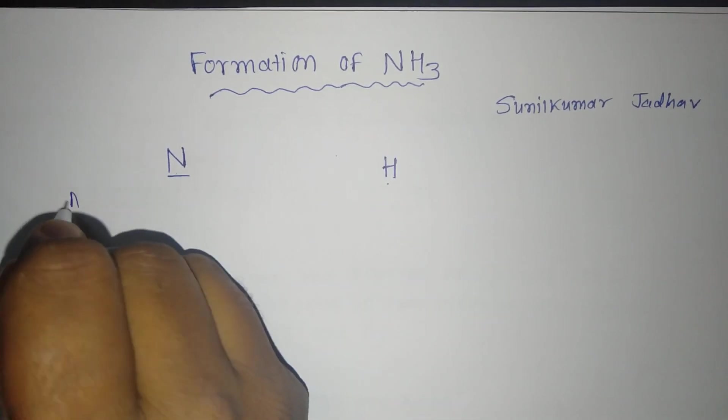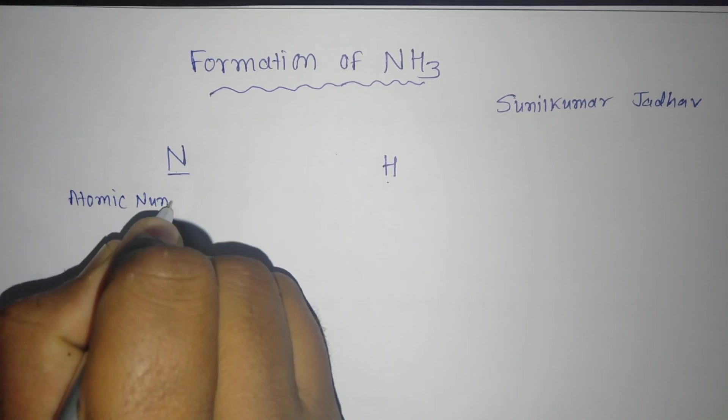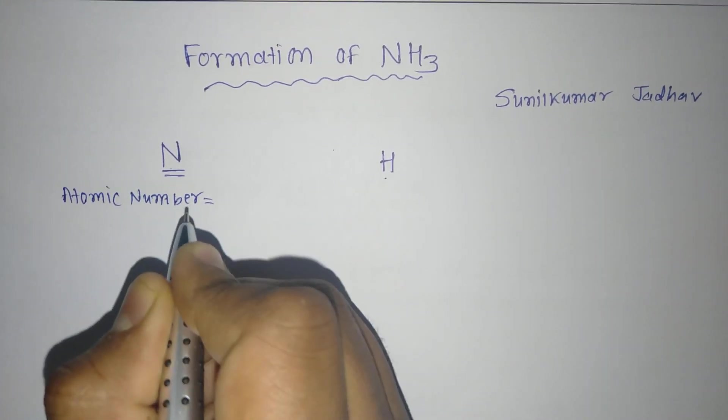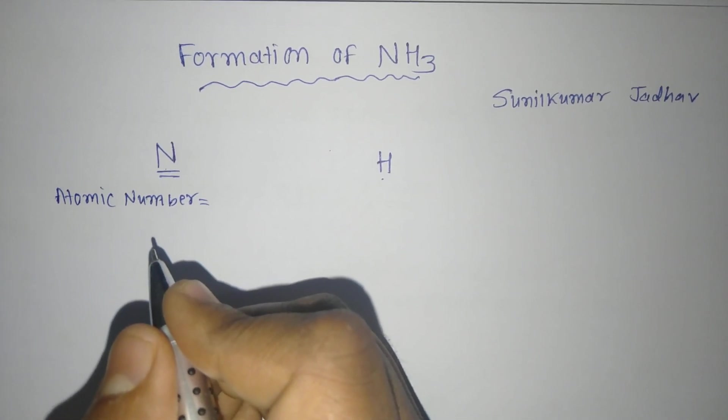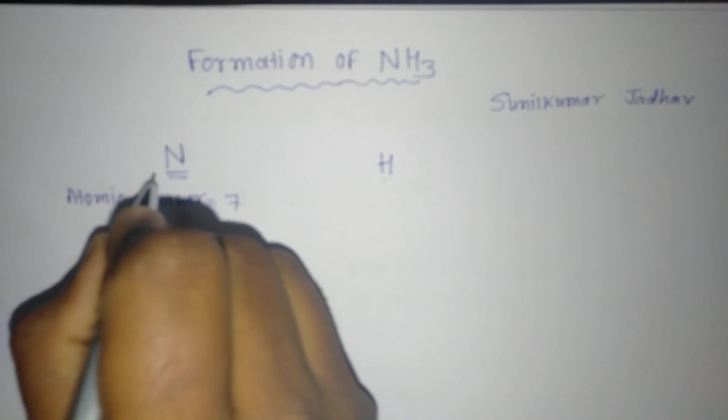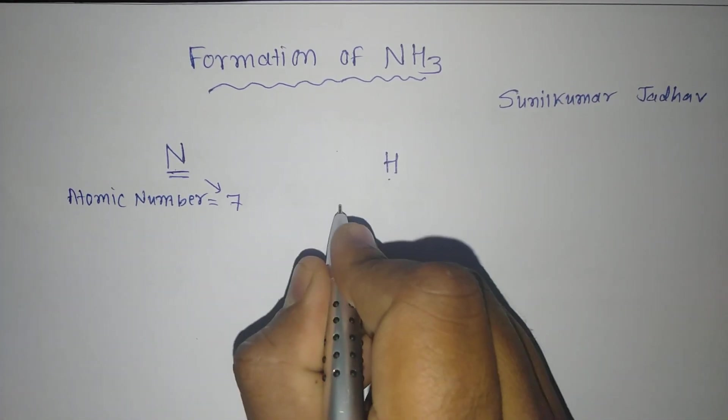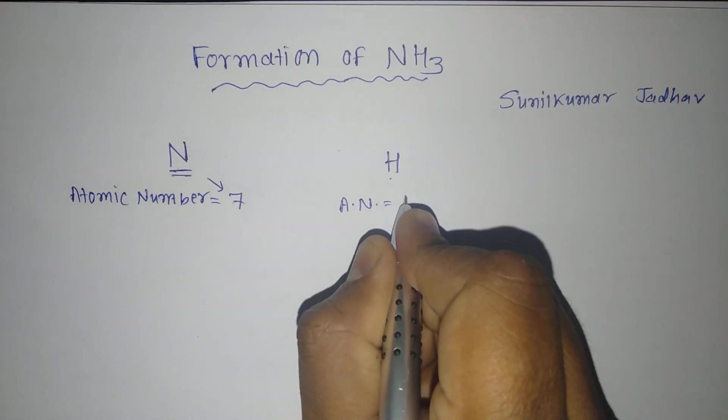We know that what is the atomic number of nitrogen? You can write atomic number of nitrogen. Atomic number of nitrogen is—you can see hydrogen, helium, lithium, beryllium, boron, carbon, nitrogen—its number is 7. For nitrogen the atomic number is 7, and for hydrogen we know that the atomic number is equal to 1.